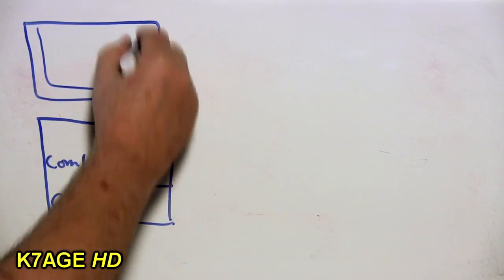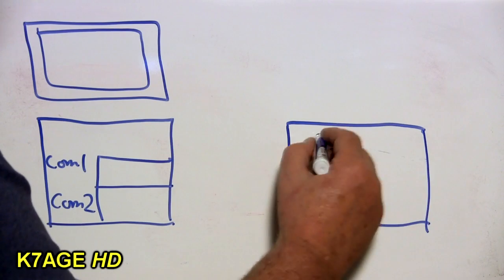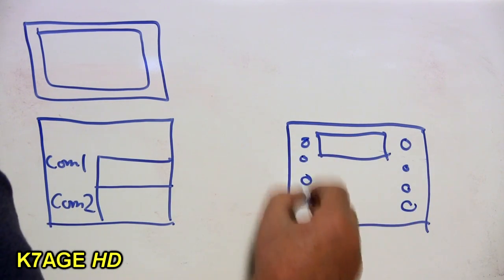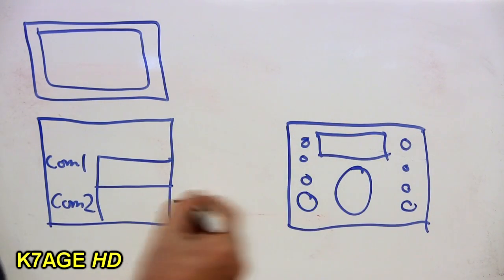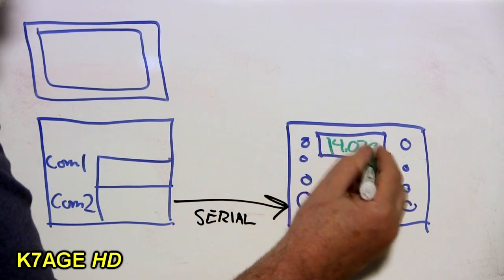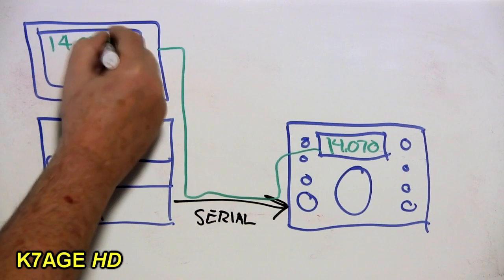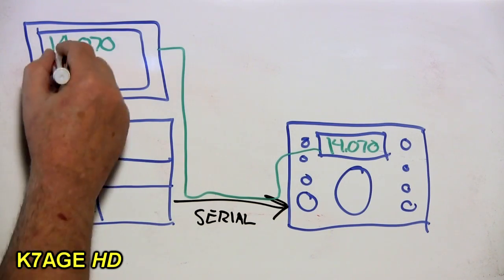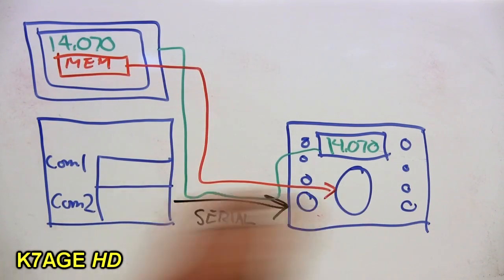The rig control connection from the computer to the radio allows your software and radio to read things like the frequency display in order to log properly. It may also provide a button that you can press to change the frequency or change bands. This requires a second serial port in addition to the one for the push to talk.